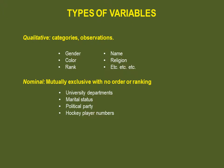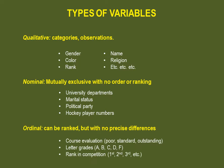Examples of nominal variables would be university departments, marital status, political party, or hockey player numbers. The second category of qualitative variables is ordinal. These can be placed into categories in ranks, but there is no precise measurement possible. Examples include course evaluations, letter grades, or rank in competition.